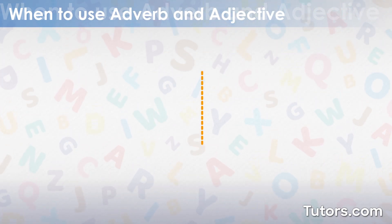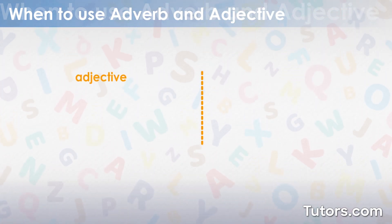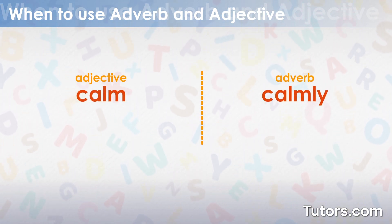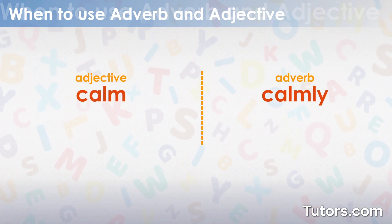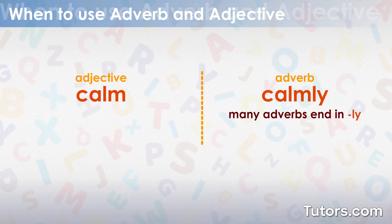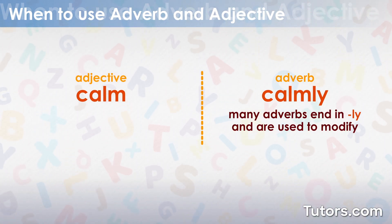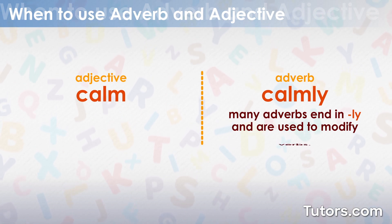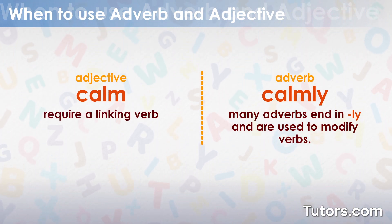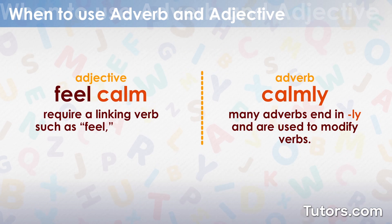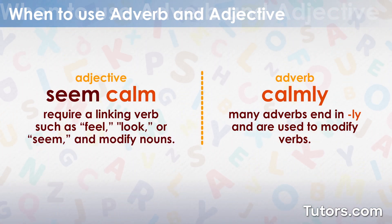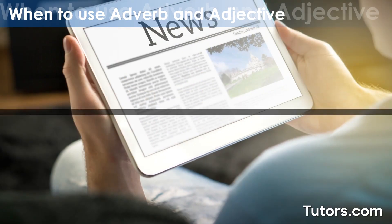It's a common error to mix up similar adjectives and adverbs like calm and calmly by using an adverb instead of a predicate adjective. Many adverbs end in -ly and are used to modify verbs. Adjectives like calm require a linking verb such as feel, look, or seem, and modify nouns.